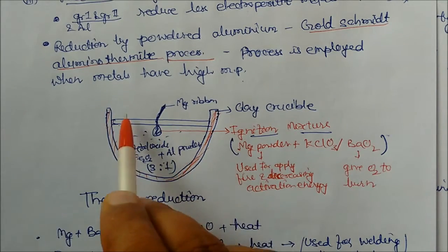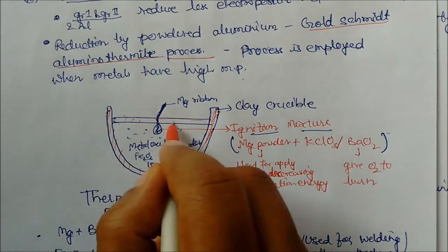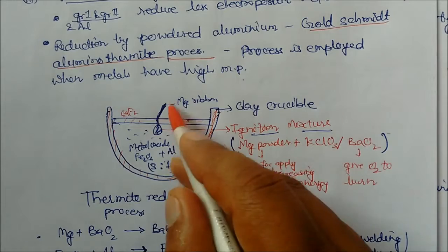Like Fe2O3 plus aluminium powder in the 3 to 1 ratio. This is one specific example. And this top portion has some calcium fluoride to protect from the external atmosphere.